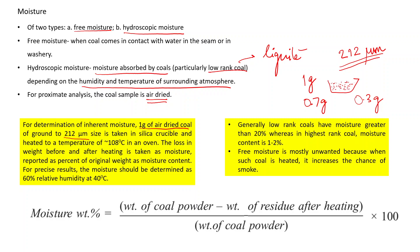All values are represented in weight percent. The formula is: weight of coal powder before heating minus weight of residue after heating, divided by weight of coal powder, multiplied by 100. Low-rank coals such as lignite and sub-bituminous have moisture greater than 20 percent, whereas the highest rank coal like anthracite has a moisture content of hardly 1 to 2 percent.